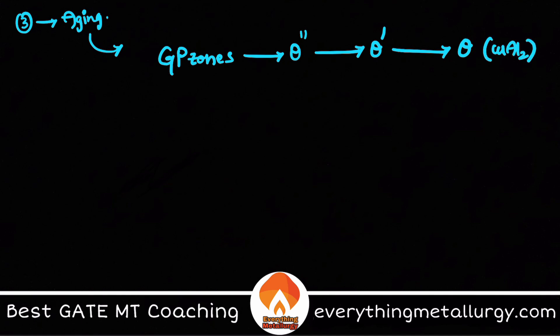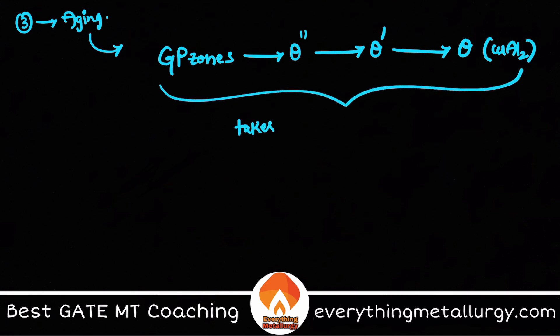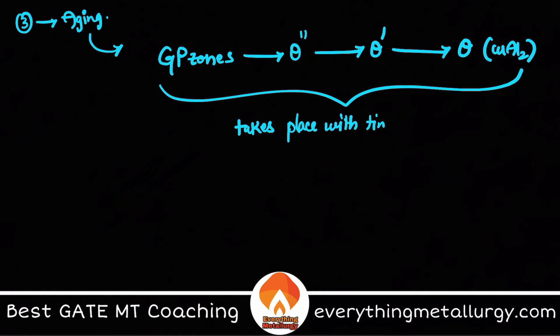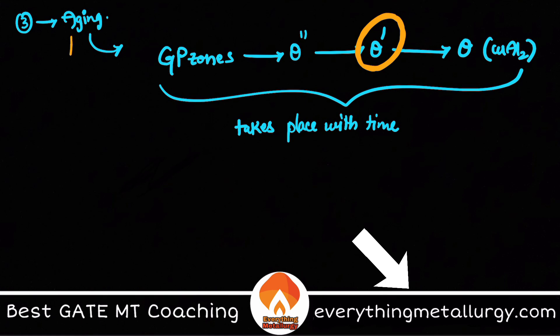This precipitation sequence takes place with time. θ' (theta dash) has the peak hardness. Aging means giving some time to the alloy after quenching so that these precipitates evolve. With aging, the hardness increases as these particular precipitates are formed.